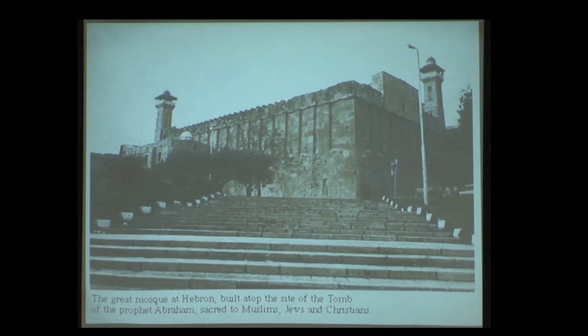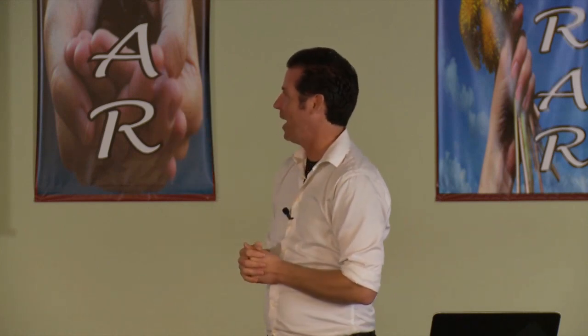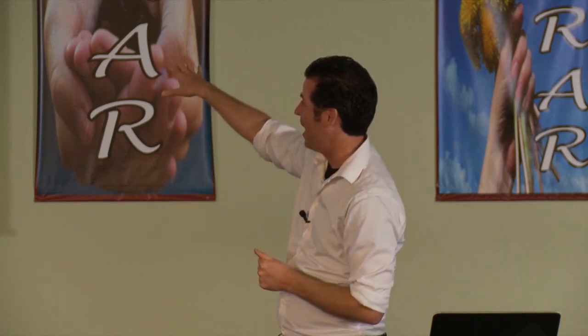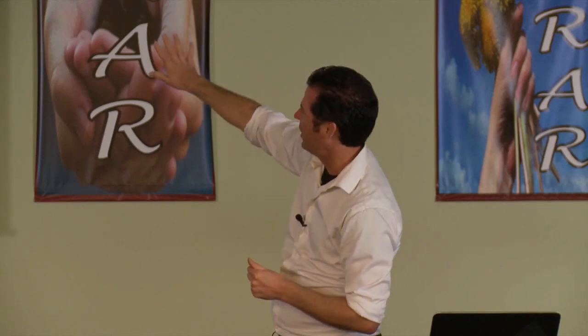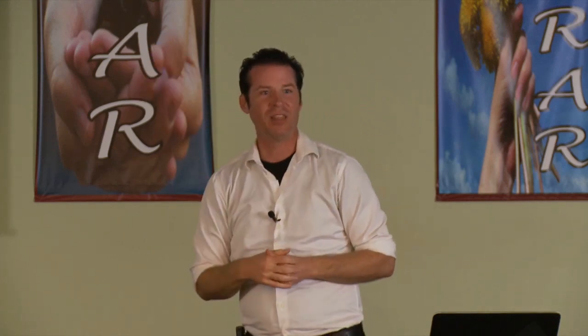That's probably what Abraham's tomb looked like, and that's what it looks like today in Hebron. Hebron is a hotbed of hostility — there are only about 500 to 600 Jews in all of Hebron. Hebron is the only place in all of Israel where Abraham actually bought a piece of land. There are about 500-600 Jews and 10,000-20,000 Arabs there.